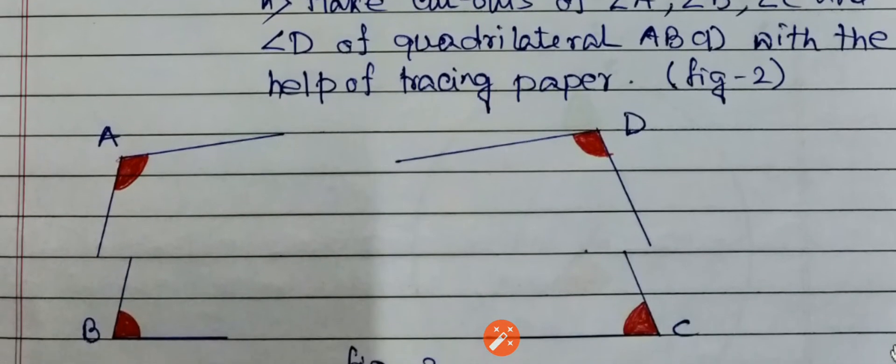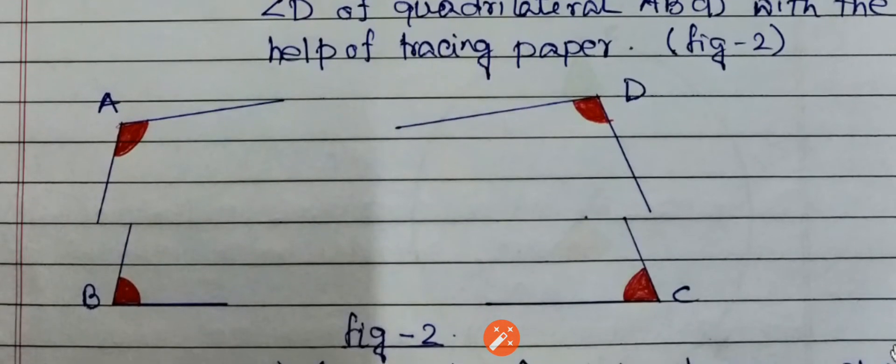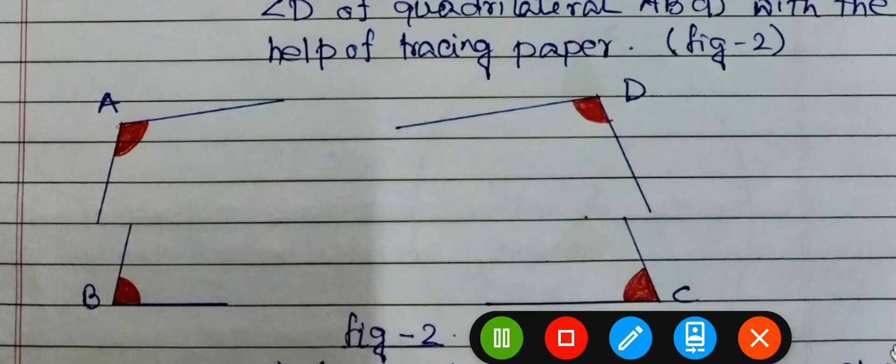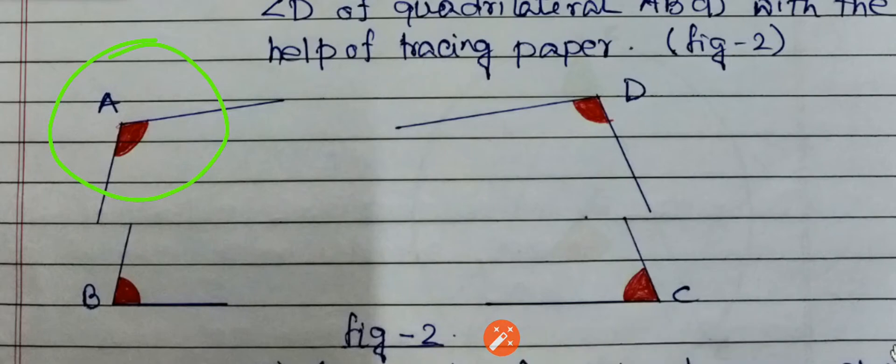After making cutouts, the figure is shown in figure 2. This is angle A cutout, this is angle B cutout, this is cutout of angle C and this is cutout of angle D.